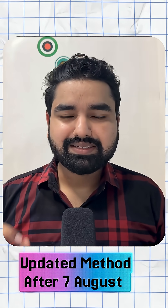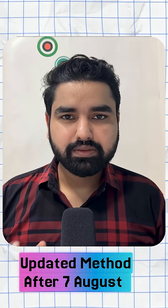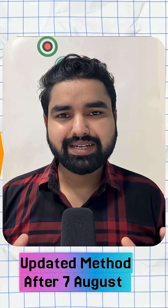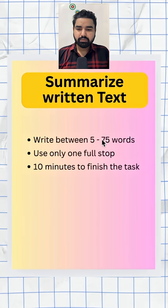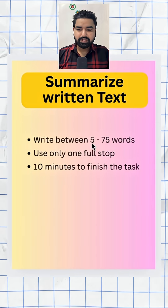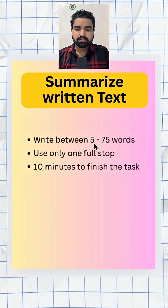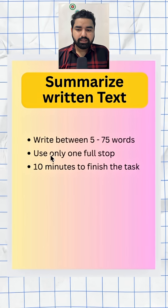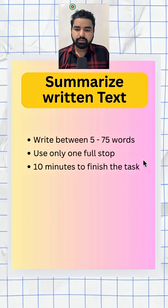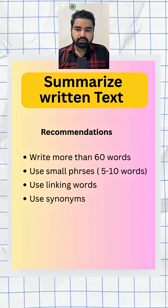How to solve Summarized Written Text — let's understand in two minutes. I'm going to tell you the basics and then perform one question so that you understand everything. In Summarized Written Text, you are supposed to write between 5 and 75 words. There will be two questions in your exam, and for each question you will get 10 minutes. You can only use one full stop.